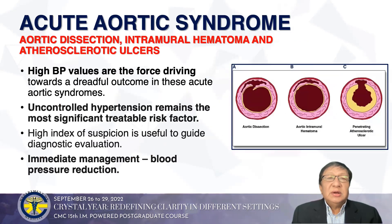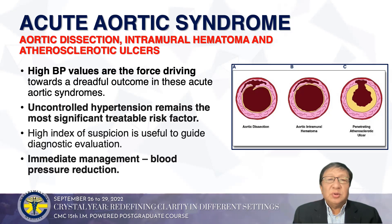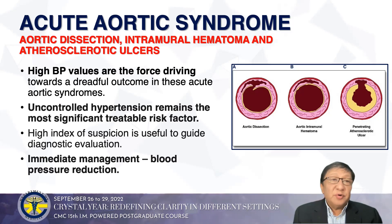Another very important condition is acute aortic syndrome, including aortic dissection, intramural hematoma, and atherosclerotic ulcers. High BP values are the driving force towards a fatal outcome in acute aortic syndromes, and uncontrolled hypertension remains the most significant treatable risk factor. Immediate management and blood pressure reduction are essential. Never forget the possibility of acute aortic syndrome in a patient presenting with hypertensive emergency.